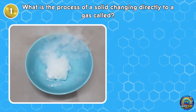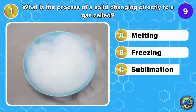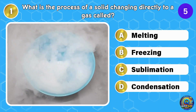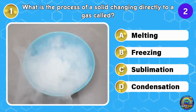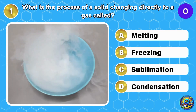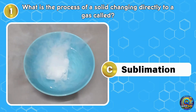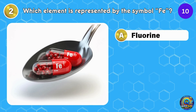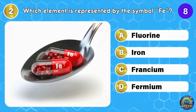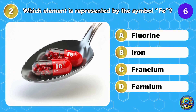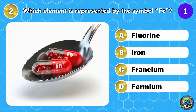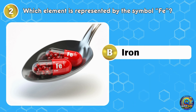What is the process of a solid changing directly to a gas called? The answer is sublimation — skipping the liquid phase just like magic. Ready for the next? Which element is represented by the symbol Fe? The answer is iron.